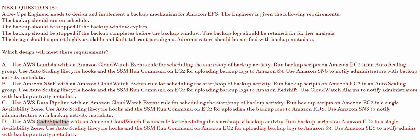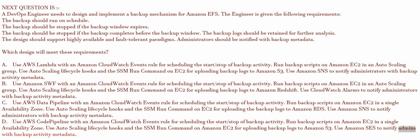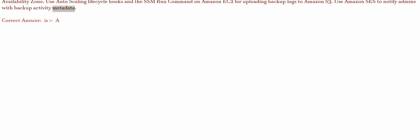D. Use AWS CodePipeline with an Amazon CloudWatch Events rule for scheduling the start/stop of backup activity. Run backup scripts on Amazon EC2 in a single availability zone. Use auto-scaling lifecycle hooks and the SSM Run Command on Amazon EC2 for uploading backup logs to Amazon S3. Use Amazon SES to notify admins with backup activity metadata. The correct answer is A.